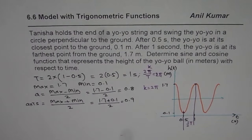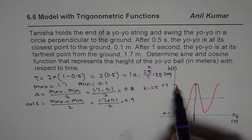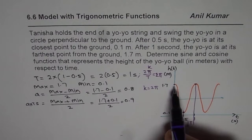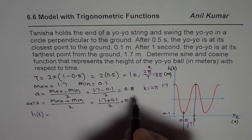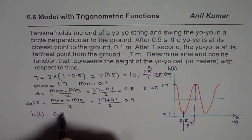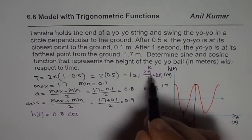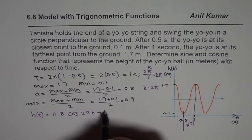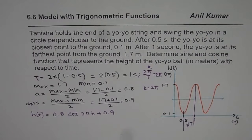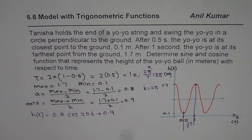Now we can write cosine function directly without any phase shift, since it starts with the maximum. So we have h of t equals to the amplitude, which is 0.8 cos of 2πt plus axis, which is 0.9. So that becomes the cosine function to represent the given wave.